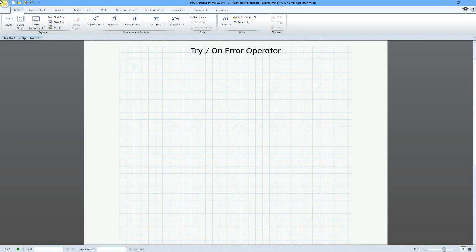In MathCad, you can use the try on error operator in order to trap errors. In other words, prevent them before they even happen.